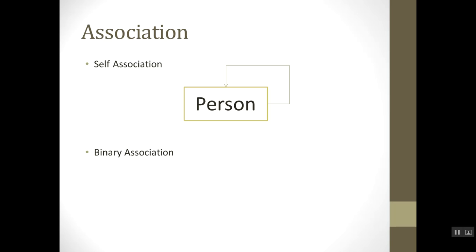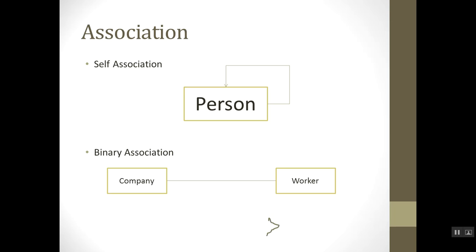Another type of association is binary association. Binary association is like: a company has a worker and a worker has a company. This is a binary association and it is bi-directional. If we specify only one direction — for example, company has a worker but not vice versa — it becomes a unidirectional association.